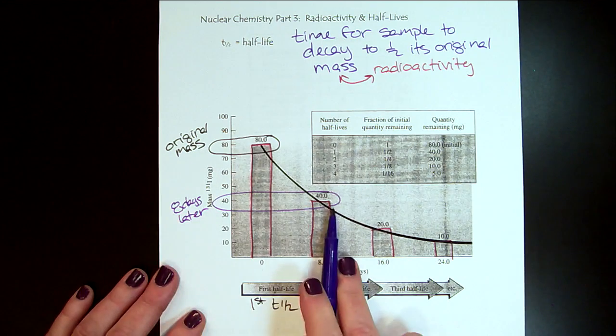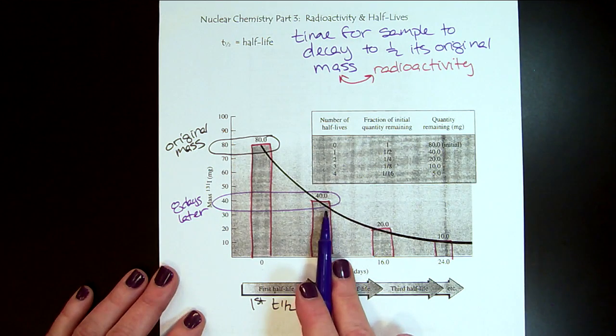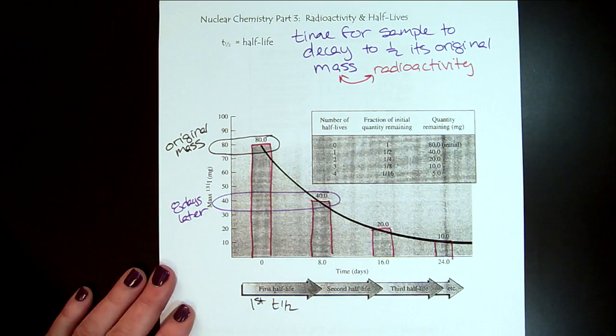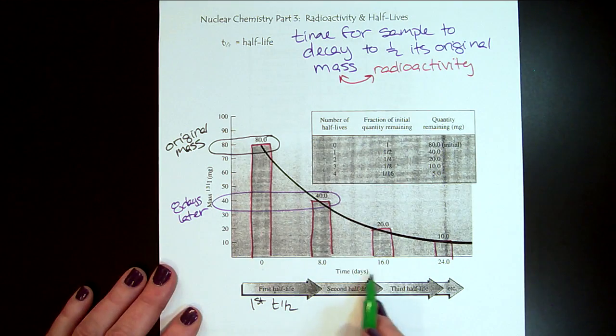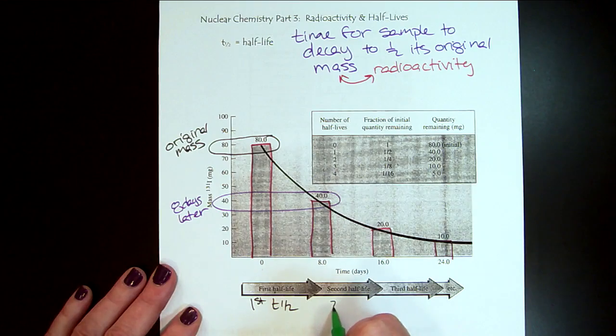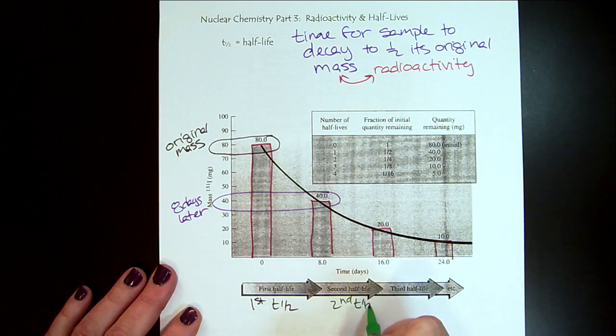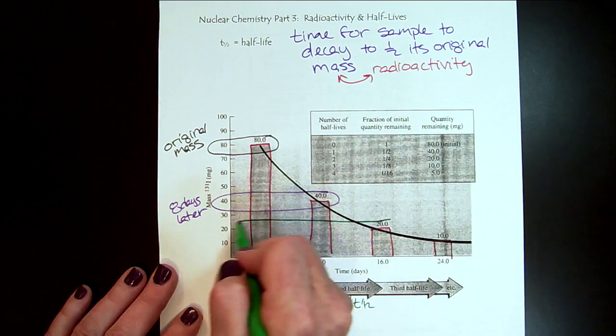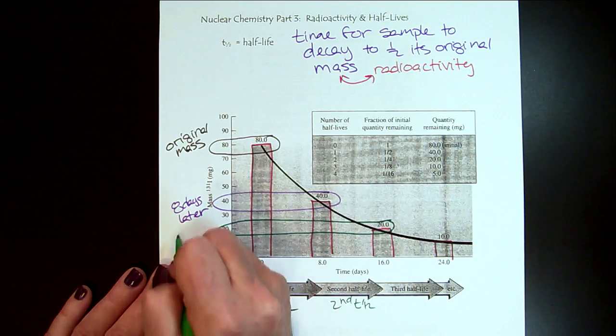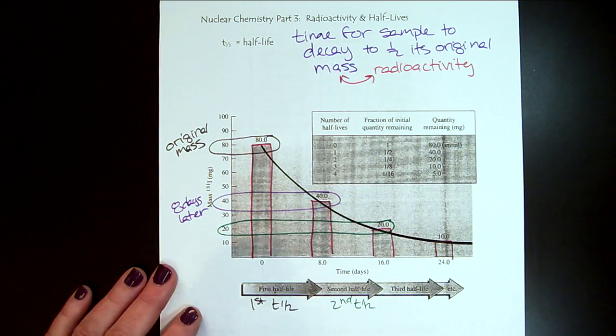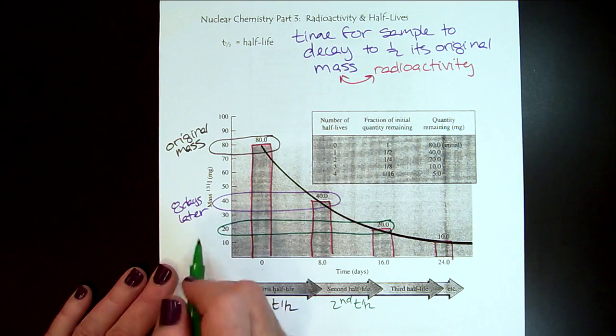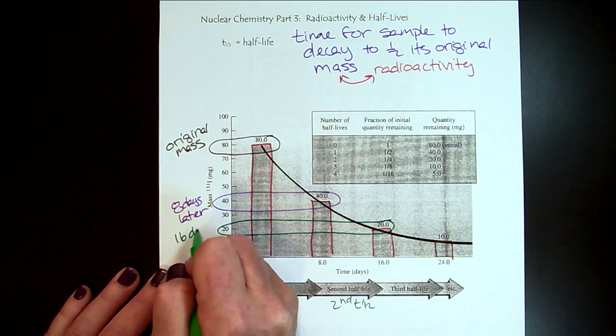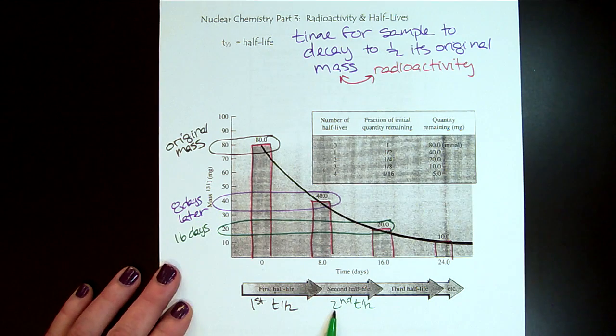So that's saying the first half-life, so in the first eight days, it drops by half. So eight days later we've done one half-life. We have half as much radioactivity, half as much sample. Now, if we wait another eight days, then that would be our second half-life. And now we see, half of 40 is 20.